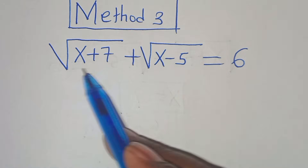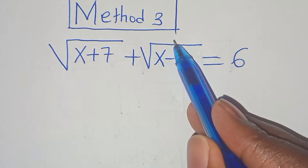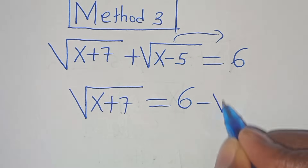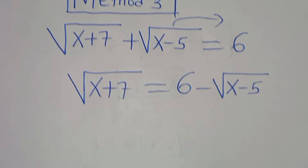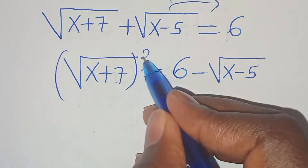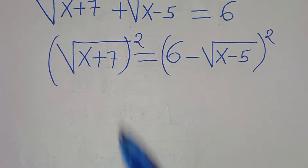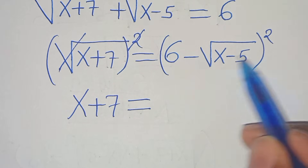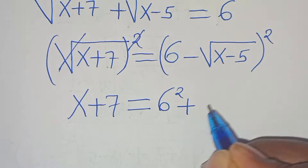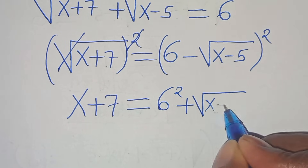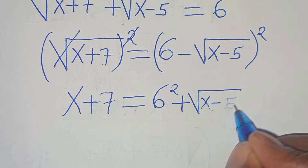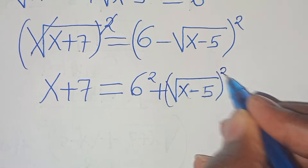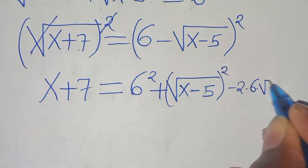In Method 3, we isolate one radical by taking the square root of x minus 5 to the right-hand side: the square root of x plus 7 equals 6 minus the square root of x minus 5. Squaring both sides, we get x plus 7 equals 6 squared plus the square root of (x minus 5) squared minus 2 times 6 times the square root of x minus 5.